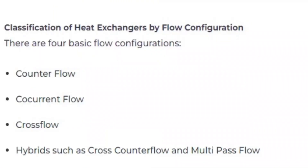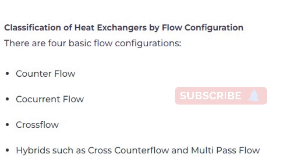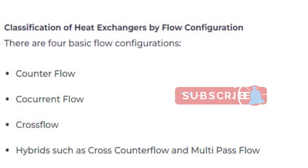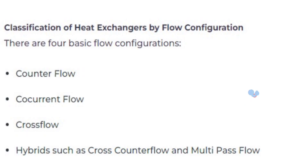There are four basic flow configurations of heat exchangers. In an idealized counterflow exchanger, the two fluids flow parallel to each other but in opposite directions. This type of flow arrangement allows the largest change in temperature of both fluids and is therefore the most efficient, where efficiency is the amount of actual heat transferred compared with the theoretical maximum. In co-current flow heat exchangers, the streams flow parallel to each other and in the same direction; this is less efficient than counterflow.